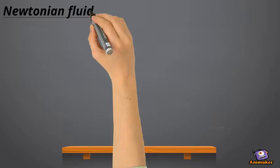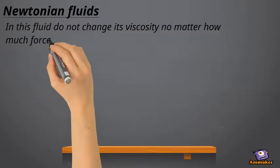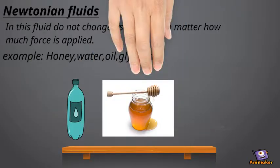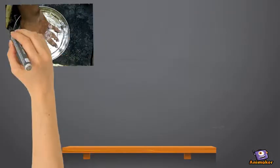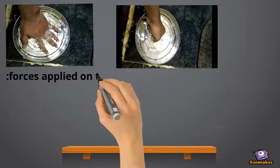Newtonian fluids: These fluids do not change their viscosity no matter how much force is applied. Examples are honey, water, oil, and glycerin. Take water in a container and try to splash or punch it with some force. You will observe that the viscosity of the fluid does not change.